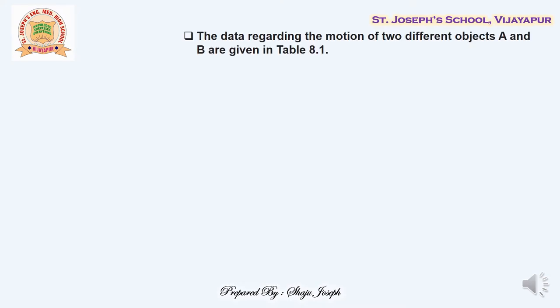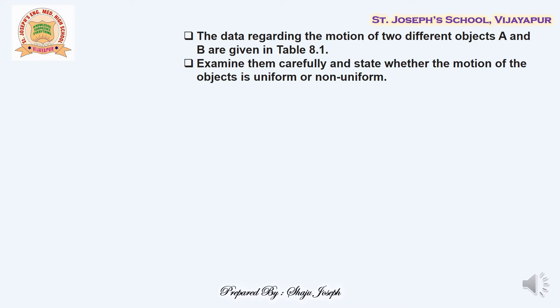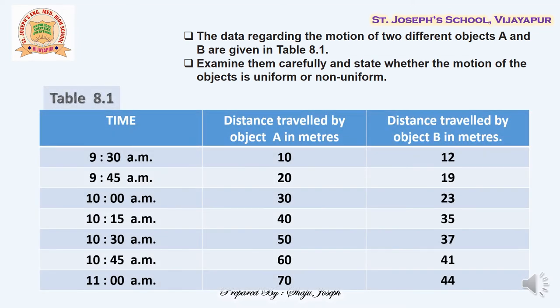Let us now consider an example to better understand uniform and non-uniform motion. Please examine Table 8.1 carefully so we can compare two different objects. The first column is about the time, the second column is the distance traveled by object A in meters, and the third column is the distance traveled by object B in meters.